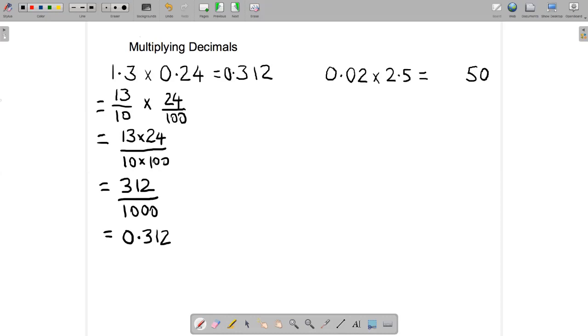And then we'll count the decimal places after the decimal point in our numbers. So we've got one, two in 0.02 and one in 2.5, so we're going to have to move the decimal point—we're going to have to make sure that in our answer there's three digits to the right of the decimal point. So let's do that. Okay, there's three digits behind our decimal point.